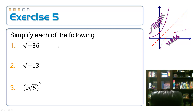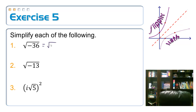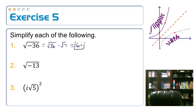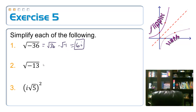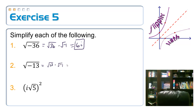Let's simplify some square roots of negative numbers. For the square root of negative 36, break it up as the square root of 36 times the square root of negative 1. The square root of 36 is 6, and the square root of negative 1 is i, so we get 6i. For the square root of negative 13, it's the square root of 13 times the square root of negative 1. Since square root of 13 doesn't simplify, we write i square root of 13 — putting the i in front so it's clear it's not under the radical.